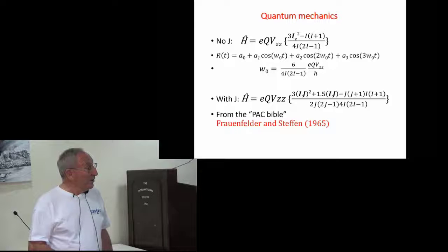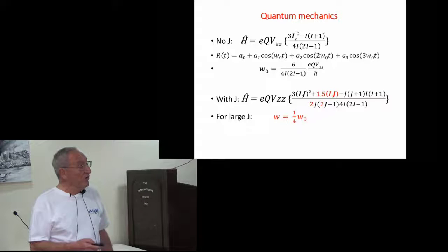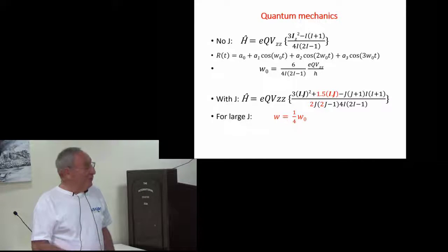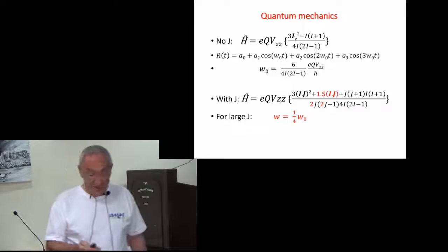And with this formula, if you look at it for very high j states - I told you all of ours are - you would get out that the frequency you get, because if you take all the j's as very, very large, so j+1, j-1 are essentially the same, you would get a quarter as the frequency. That's what we expected.